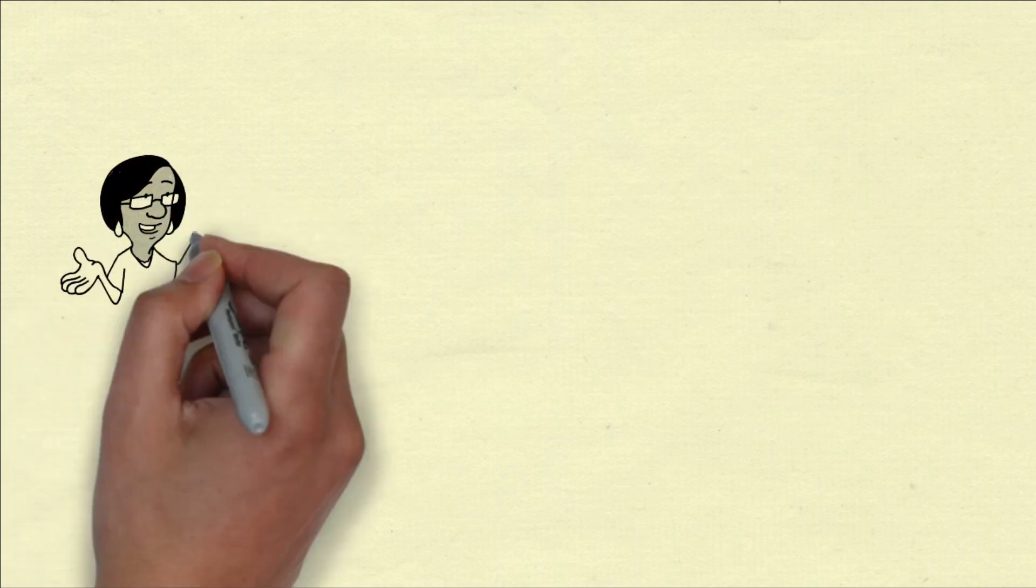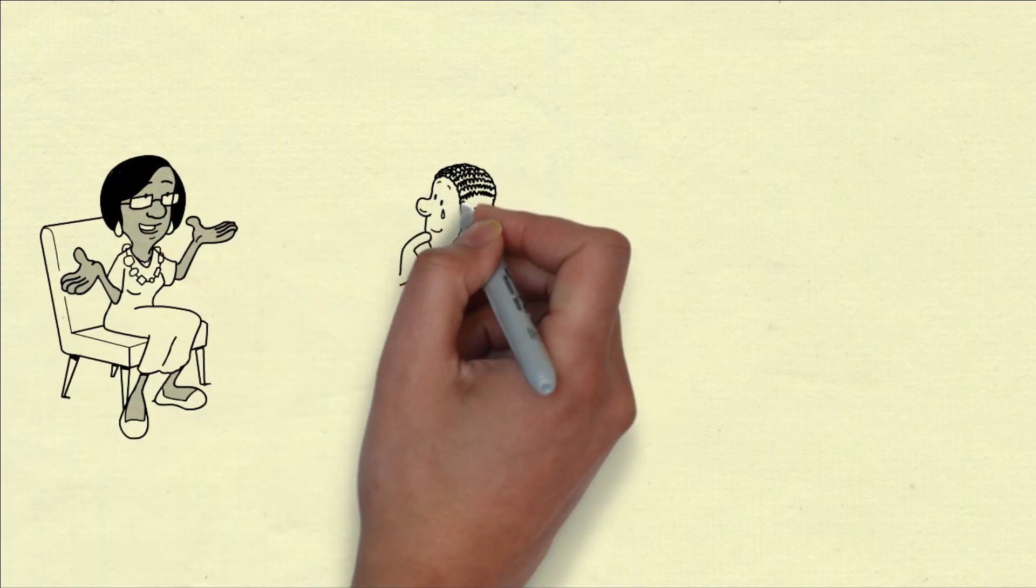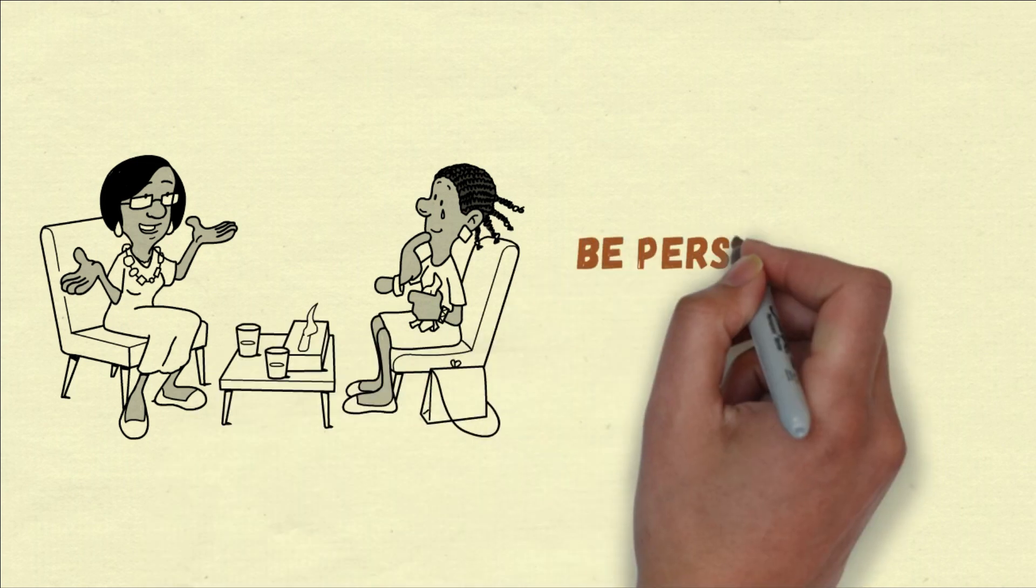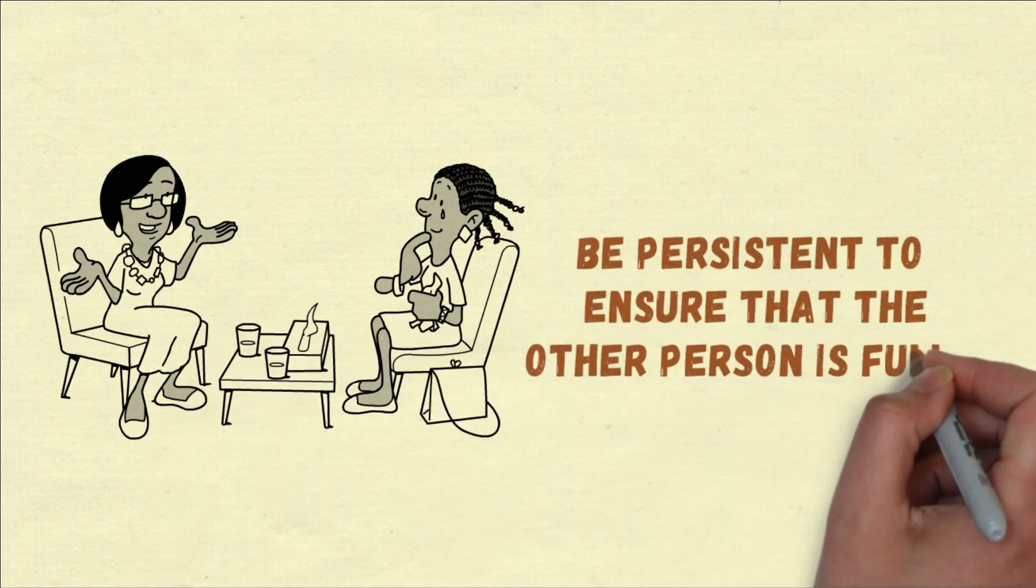Upon meeting an Aries Rising sign, they can be easy to spot after a brief conversation. These natives love to argue, and they'd be persistent to ensure that the other person is fully aware of their opinion.